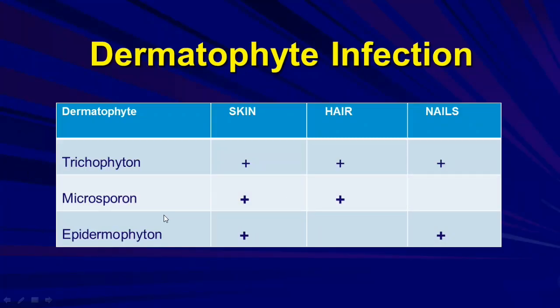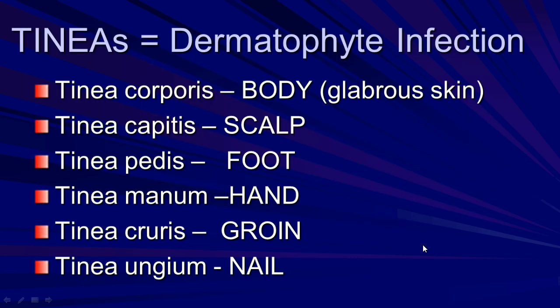Trichophyton involves skin, hair, and nails. Microsporum involves skin and hair; nails are negative. Epidermophyton involves skin and nails. Tinias are dermatophyte infections at different sites: tinea corporis is the body, tinea pedis is the foot, tinea manuum is the hand, tinea cruris is the groin, tinea unguium is the nail.